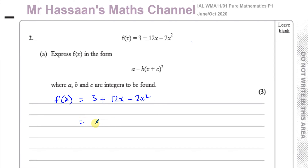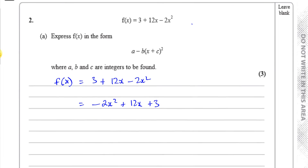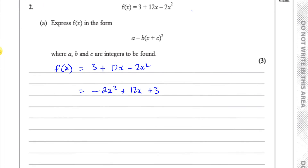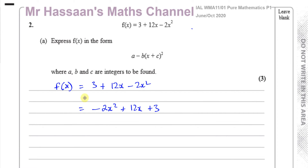So we start off with f(x) = 3 + 12x - 2x². The first thing I'm going to do is rearrange it to write it in terms of x² first: -2x² + 12x + 3. I'm concerned about the x² and x terms. This must be x squared — not -2x² — so I'm going to take out -2, which is a factor of the first two terms. So this gives x² - 6x inside the bracket.